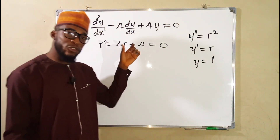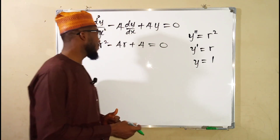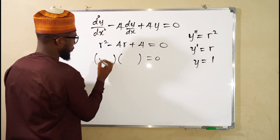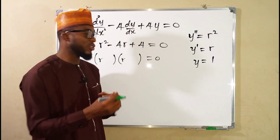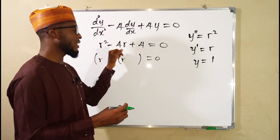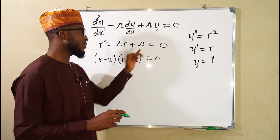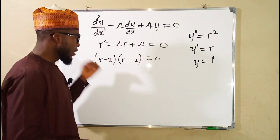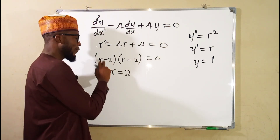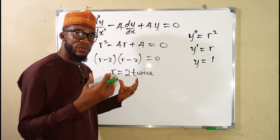We are going to solve for r. The nature of r, which is the root of the equation, will determine the form of the general solution we are going to obtain. By factorization, we think of two numbers which when multiplied together give the constant term 4, and when added together give the coefficient of the middle term, which is negative 4. The numbers are negative 2 and negative 2, because negative 2 times negative 2 is positive 4, and negative 2 plus negative 2 is negative 4. Setting each factor equal to 0, we obtain r equals 2 for both factors — so r equals 2 twice. We say we have real and equal roots.